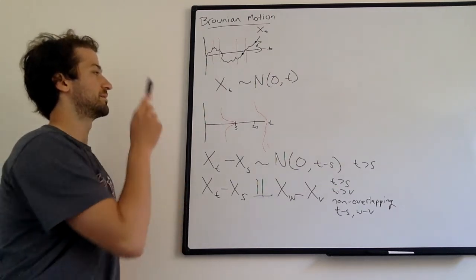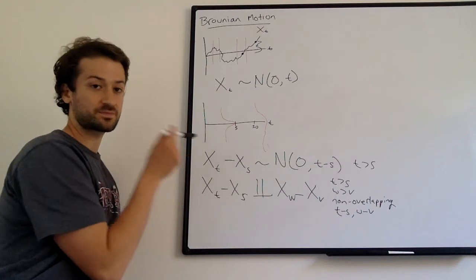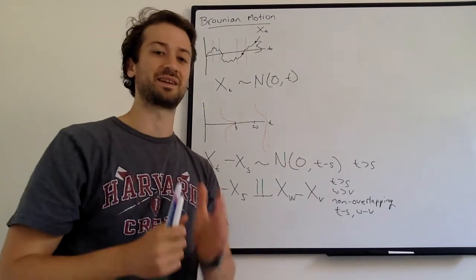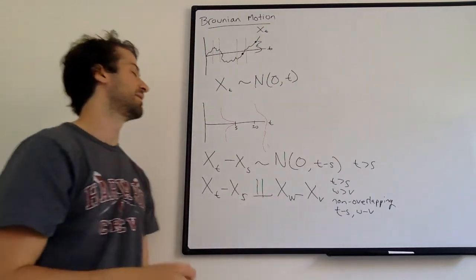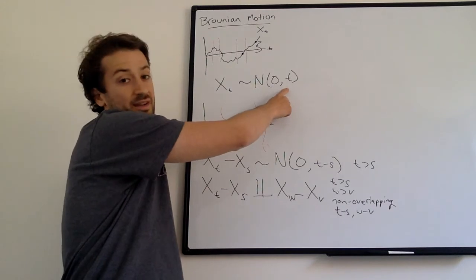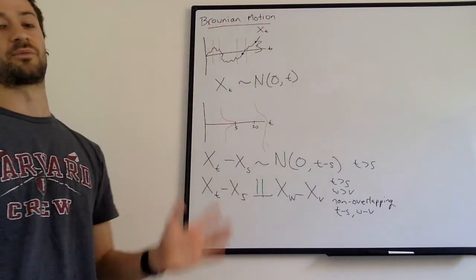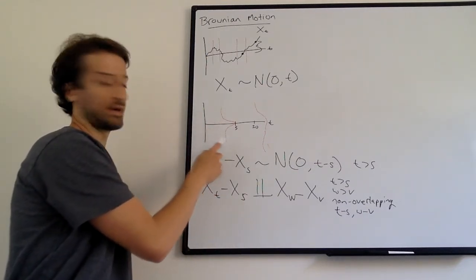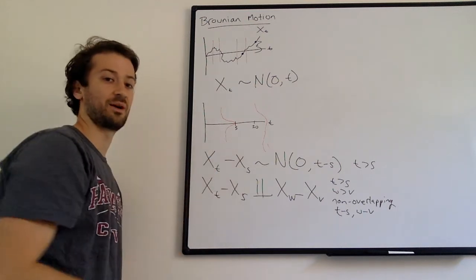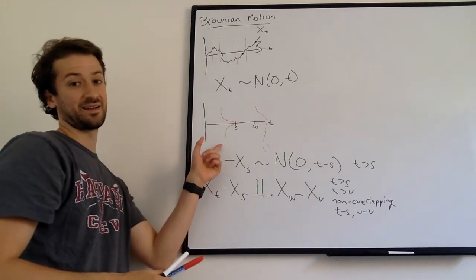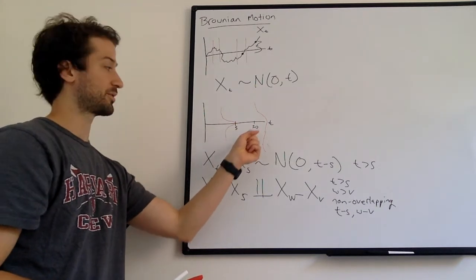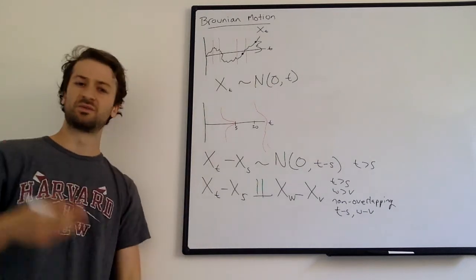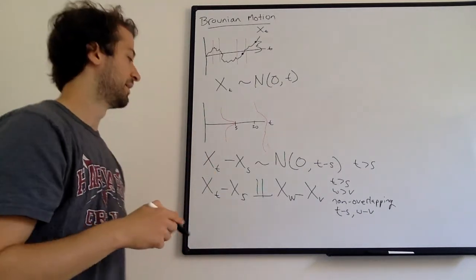So again, just to recap, x sub t is normal. The mean is always zero. It doesn't, I might misspoke earlier. It doesn't mean on average it's zero. It just means that the mean is zero, the most likely value is zero. The variance grows with time. The variance is time. So the more time we go, the more unsure we're going to be. You can see that here, early on, if we started at zero earlier on, we have more confidence about where x sub t will be. It's less likely to see a value far away from zero. Whereas the farther time goes on, the wider the distribution gets, the more likely we are to see a big value, which makes sense because it has more time to drift around.